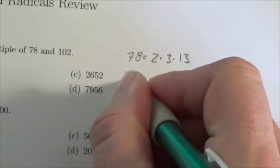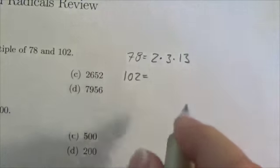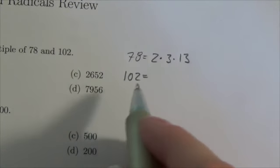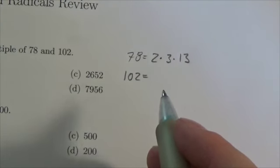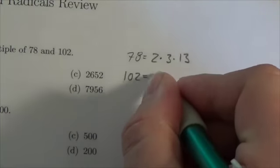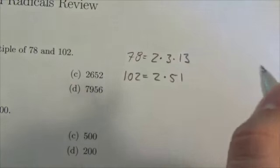Now we're going to do the prime factors of 102. I know that 102 is divisible by 2, so I'm going to divide out the 2, and I'm going to be stuck with 51.